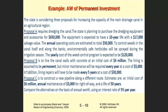The last one is Proposal C: to construct a new pipeline with an initial cost estimated at $6,000,000. The operating cost is $3,000 annually and the life is 50 years. Compare the alternatives on the basis of annual worth using an interest rate of 5%.